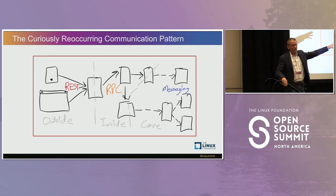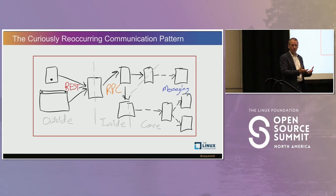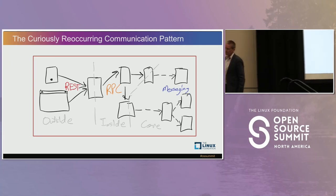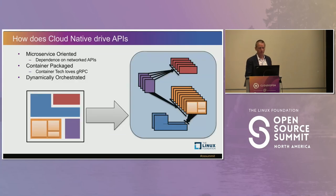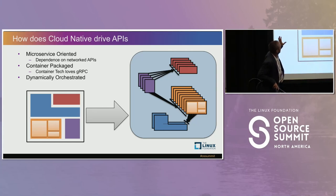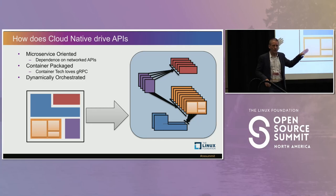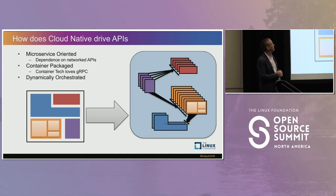Those messaging systems have APIs too — you can't put a message in and have somebody pull it out without knowing what it is. There's got to be some sort of schema associated with those things. All of these technologies are wired into the idea of a schema, whether it has functions you call or just messages. The cloud-native approach — microservice-oriented, container-packaged, dynamically orchestrated — has driven a lot of interest in APIs and people building so many services that APIs become a real piece of the puzzle.